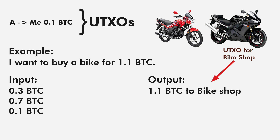Now I will have only one UTXO left: 0.1 Bitcoin, and this is considered my balance. So the balance you see on your wallet is all UTXOs. This is all about transactions and UTXOs. I hope you have understood it, and on this note I will see you in the next video.